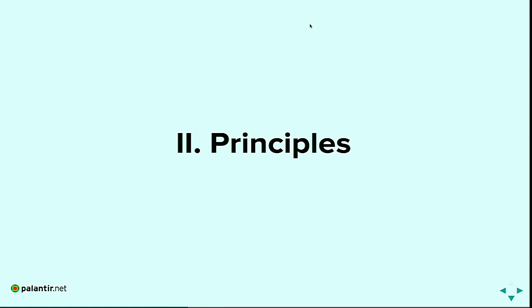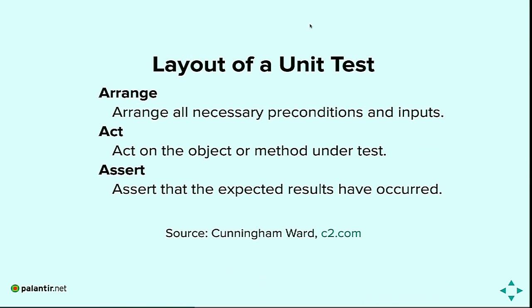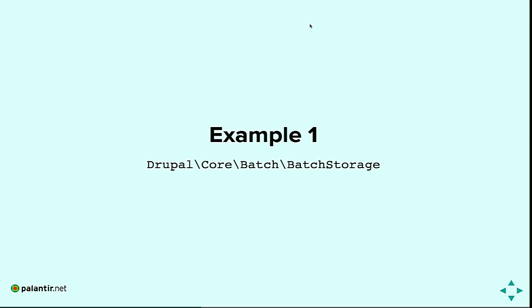Let's move on to principles and code examples. The examples use the AAA format — Arrange, Act, and Assert. The first lines arrange things: we set up our mocks or spies and the class we're going to test. Then we act on that class, calling the method we want to test. Last, our assertion should be the very last thing in our test method. Visually you should see this distinction clearly.